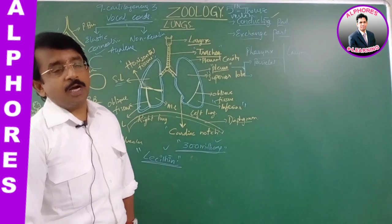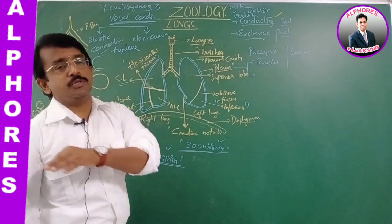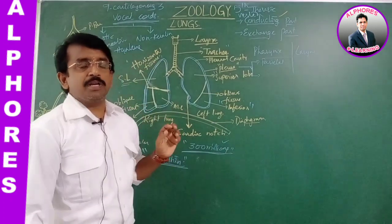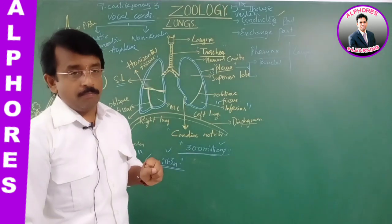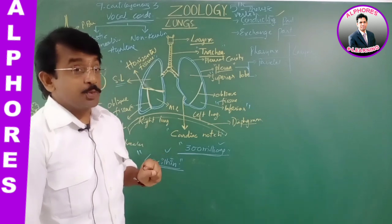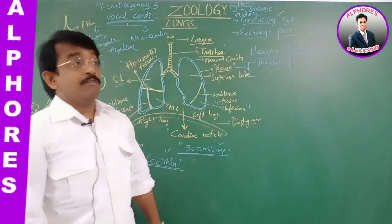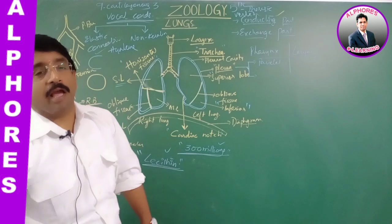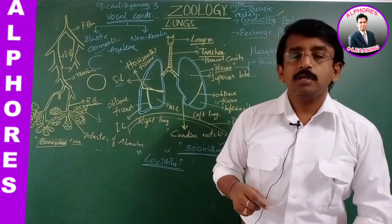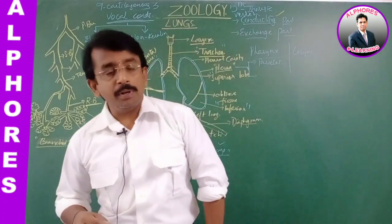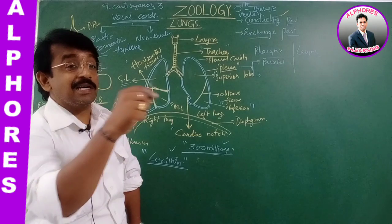As aquatic life shifted into the terrestrial mode of life, the pulmonary sacs became the respiratory organs. Generally, human beings cannot be underwater for a long period. We need atmospheric air. Among the mammals, the elephant seal is an example which can be in water for 2 hours, like other aquatic animals.